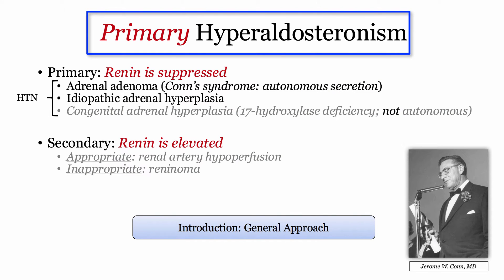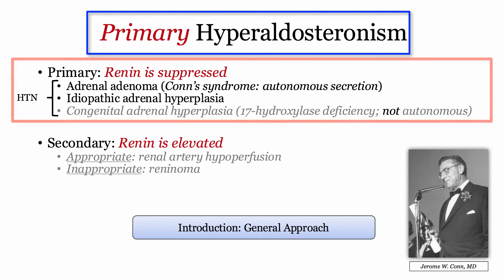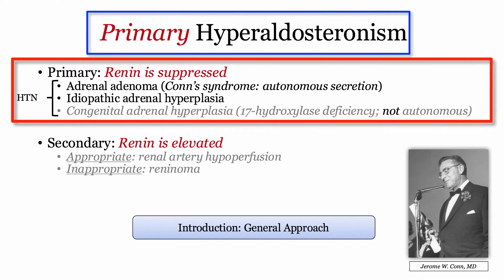The focus of today's presentation is primary hyperaldosteronism. This category basically includes the adenoma referred to as Conn's syndrome. We will also briefly address idiopathic adrenal hyperplasia. For completeness, congenital adrenal hyperplasia, characterized by 17-hydroxylase deficiency, is also associated with elevated aldosterone levels, but in this instance it is not autonomous.